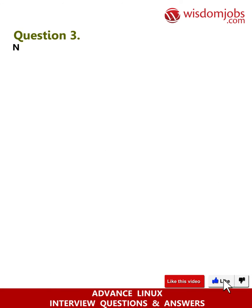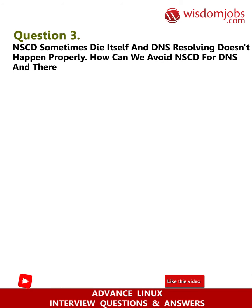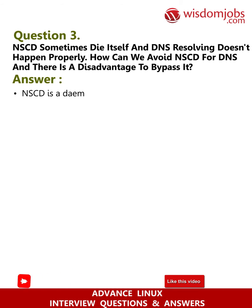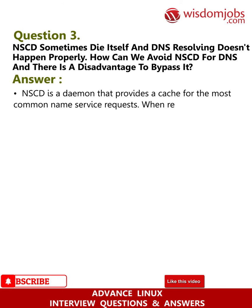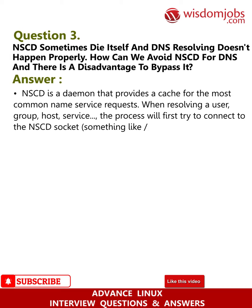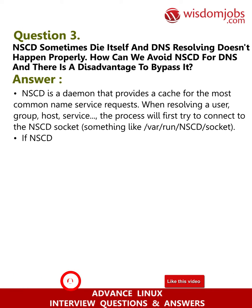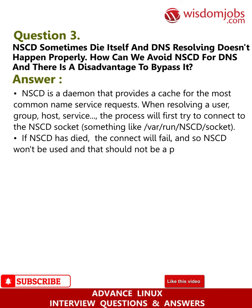Question 3: NSCD sometimes dies itself and DNS resolving doesn't happen properly. How can we avoid NSCD for DNS, and is there a disadvantage to bypassing it? NSCD is a daemon that provides a cache for the most common name service requests. When resolving a user, group, host, or service, the process will first try to connect to the NSCD socket, something like /var/run/nscd/socket. If NSCD has died, the connect will fail, and so NSCD won't be used, which should not be a problem.